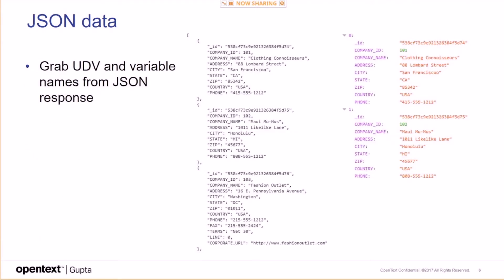For JSON data, you grab the UDV and variable names from the JSON response. You need to look up the variable names and your UDV member names need to match those names. If there's a top-level variable, you need to use that for the array as well.